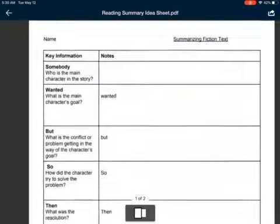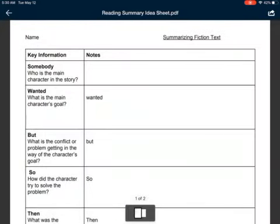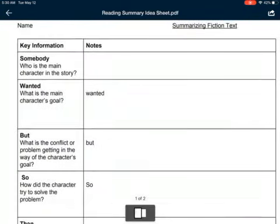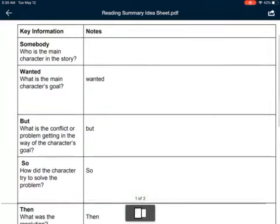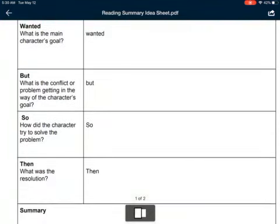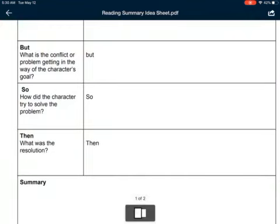So we have two columns: the Key Information column and the Notes column. We have 'Somebody'—who's the main character in the story—and that's where we write down who the main character is. 'Wanted'—what is the main character's goal. 'But'—what is the conflict or problem getting in the way of the character's goal. 'So'—how did the character try to solve the problem.